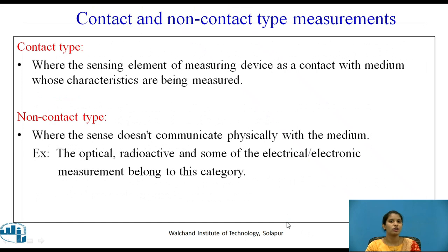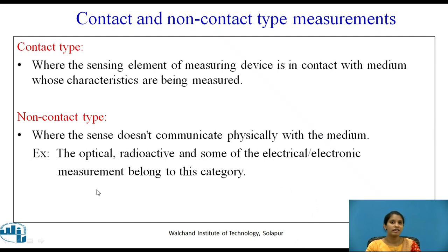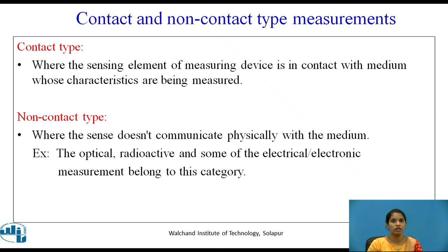Contact and non-contact type of measurement. In contact type measurement, the sensing element of the measuring device is in contact with the medium whose characteristics are to be measured. In non-contact type, the measuring instrument is not in direct contact with the medium — these are typically electrical or electronic devices.